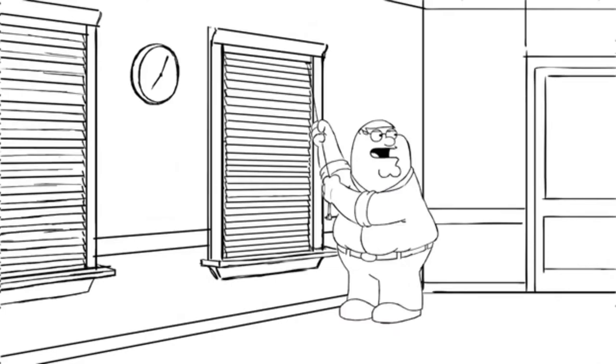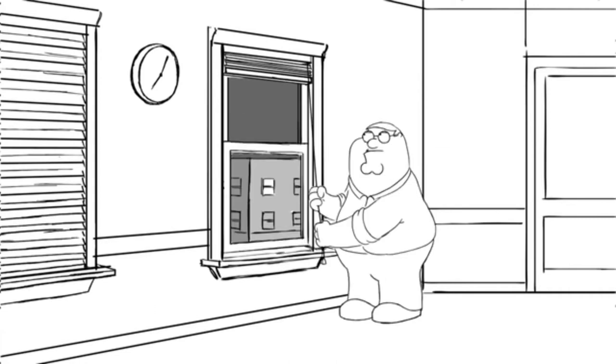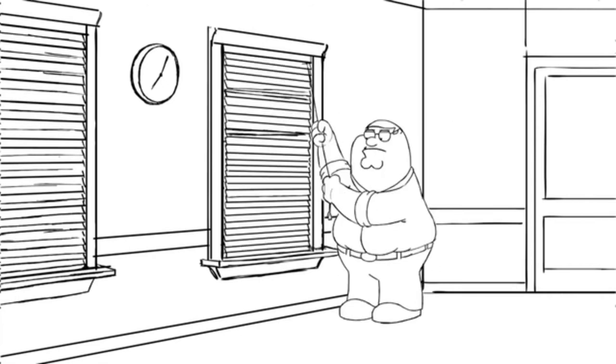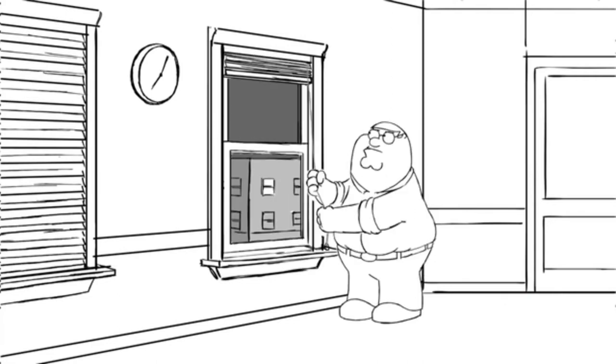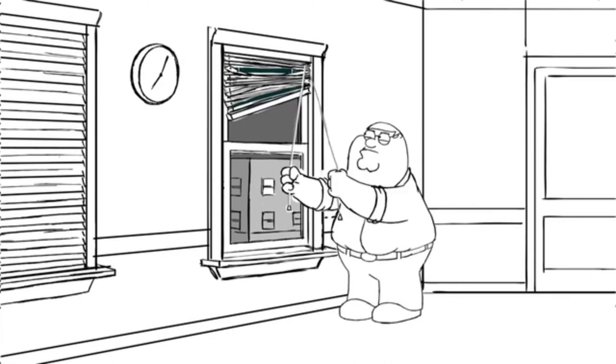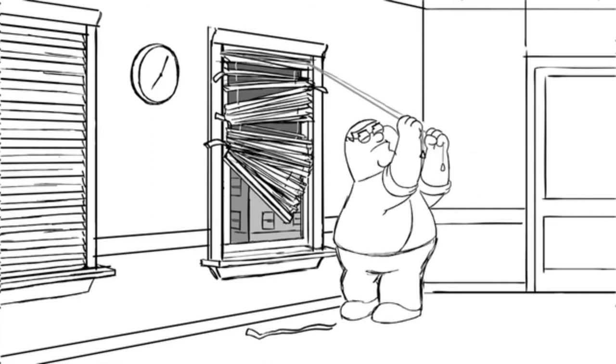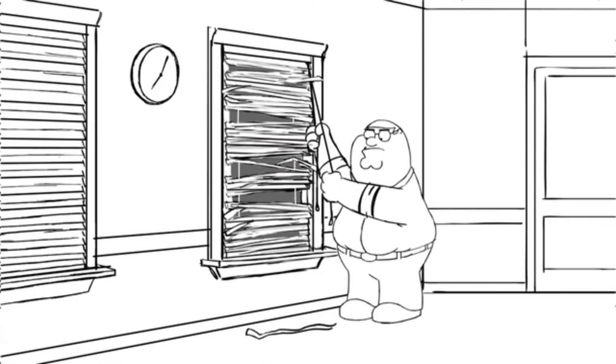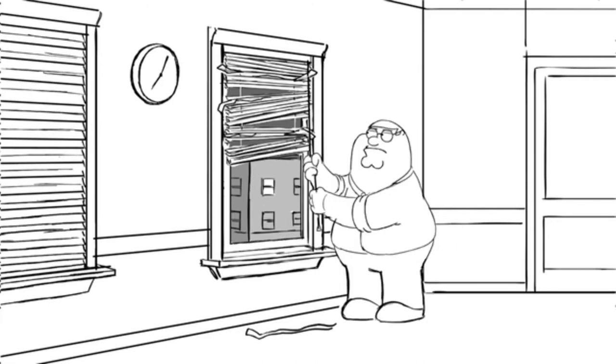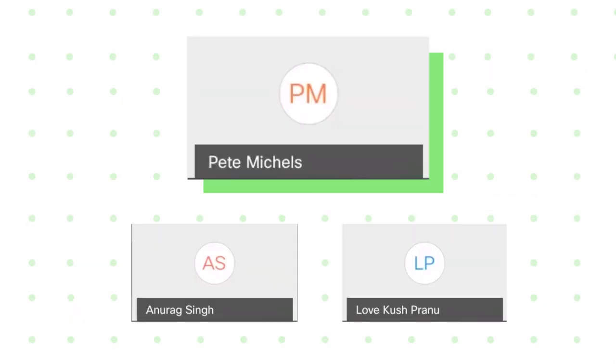Let me show you an example of an animatic. We take the storyboard drawings, edit them together with the dialogue, and time it all out — it's basically a pencil test of the animation, our plan before actual animation. This is a scene from Family Guy where Peter and Brian have jury duty and Peter has to adjust the blinds. [Animatic plays: Peter struggles comically with the blinds while Brian and other jurors comment — 'You got to yank it to the side, Peter.' 'I'm yanking it as far as it goes.' 'The left side's getting lower than the right side.' 'Now twist it.' 'Now it's open.'] That's what an animatic is.